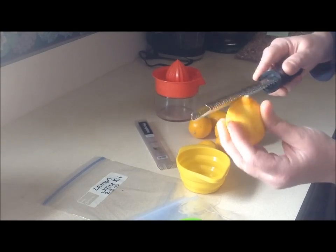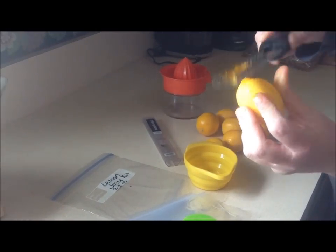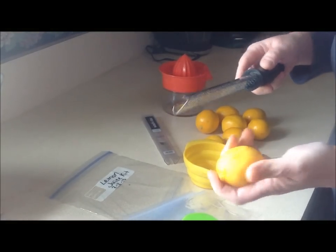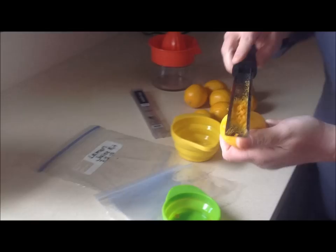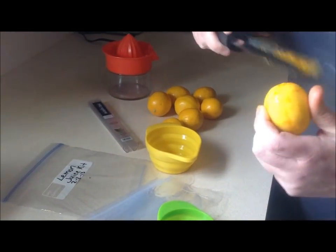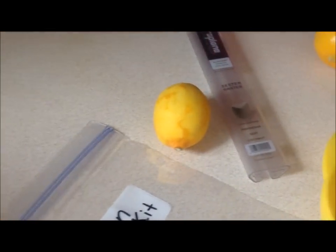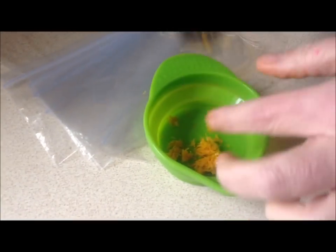It can be tricky. You've got to kind of touch them and see how they feel. Finish zesting your lemon so that the outside is pretty much cleaned up. It looks like this. And scrape your zest into the bowl.